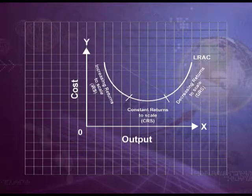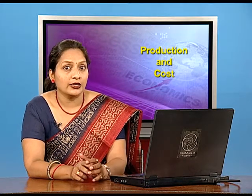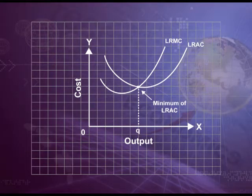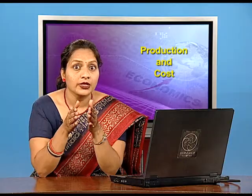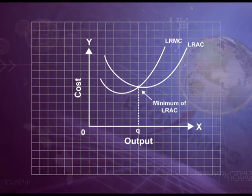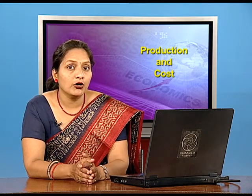Accordingly, the long-run average cost is a U-shaped curve, as initially increasing returns to scale operate, then constant returns to scale, and finally diminishing returns to scale. The long-run marginal cost curve is also U-shaped. For the first unit of output, both LRAC and LRMC are the same. As long as average cost is falling, marginal cost must be less than average cost. When average cost is rising, marginal cost must be greater than average cost. The LRMC curve cuts the LRAC curve from below at the minimum point of the LRAC.